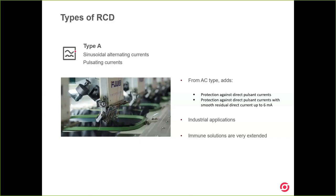These are the features that Circutor includes in the ultra-immune system, which is included in all type A solutions in the Circutor catalog. That's it about type A, which is the most common solution up to now in the market.